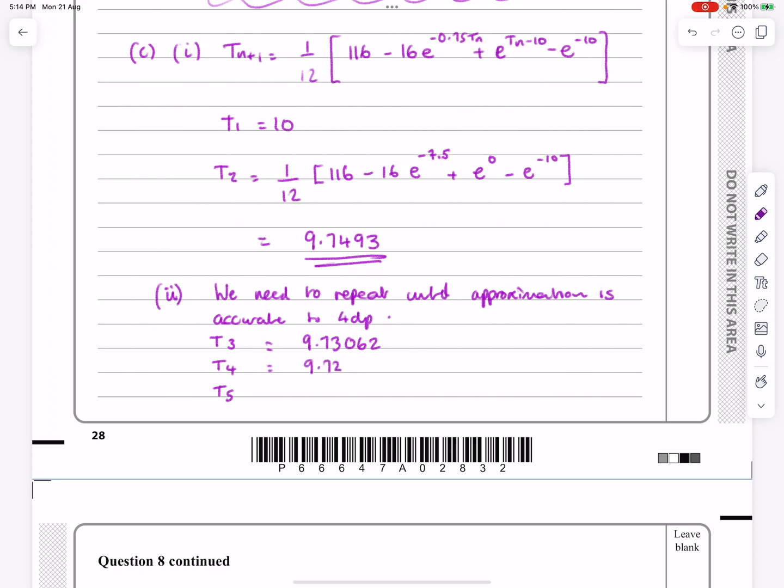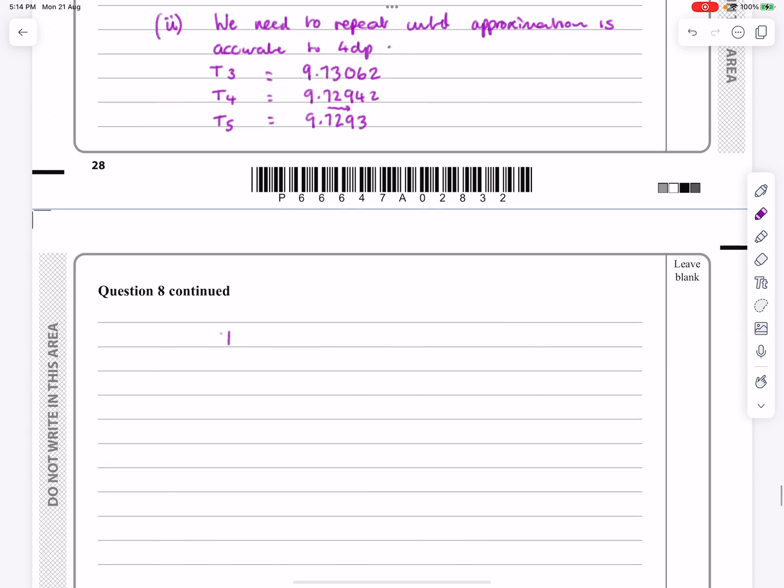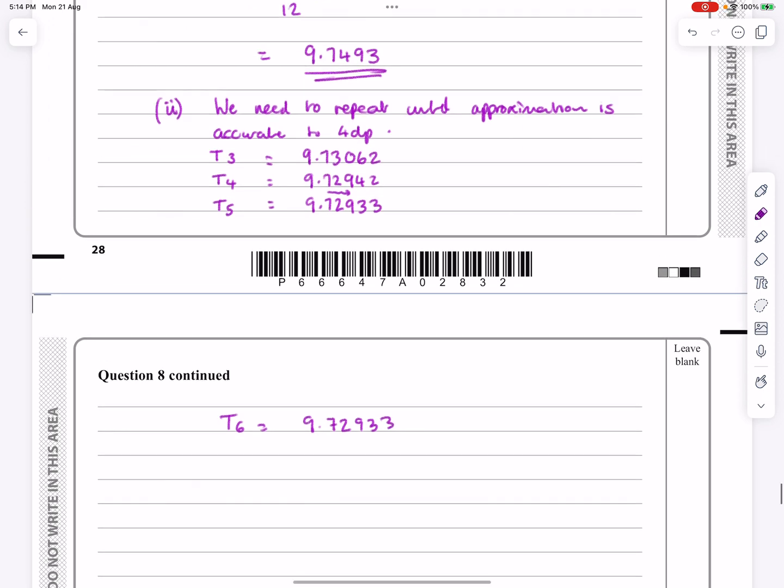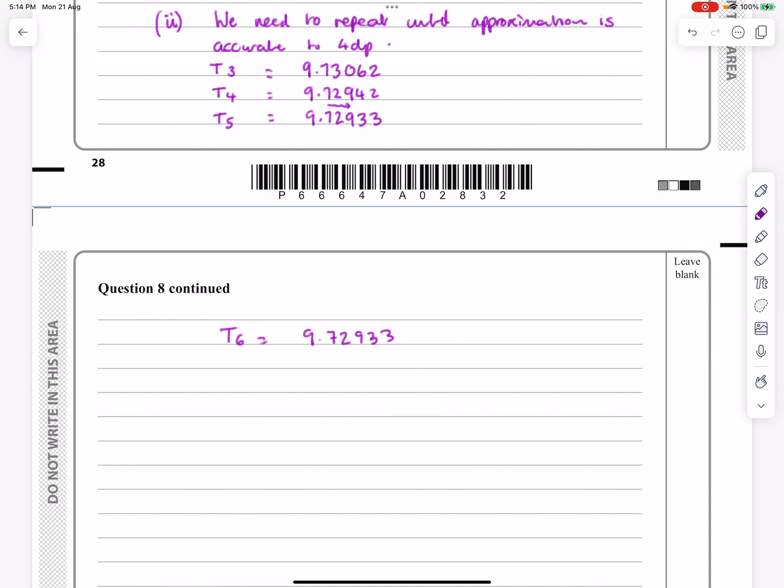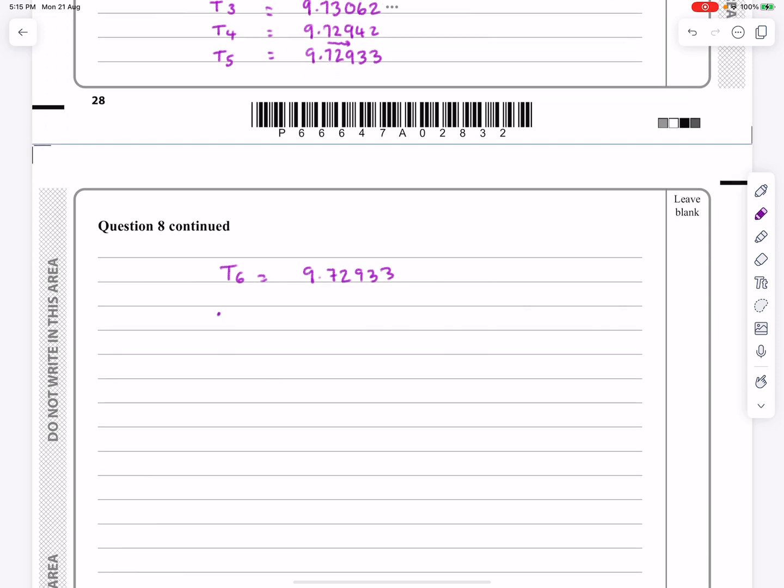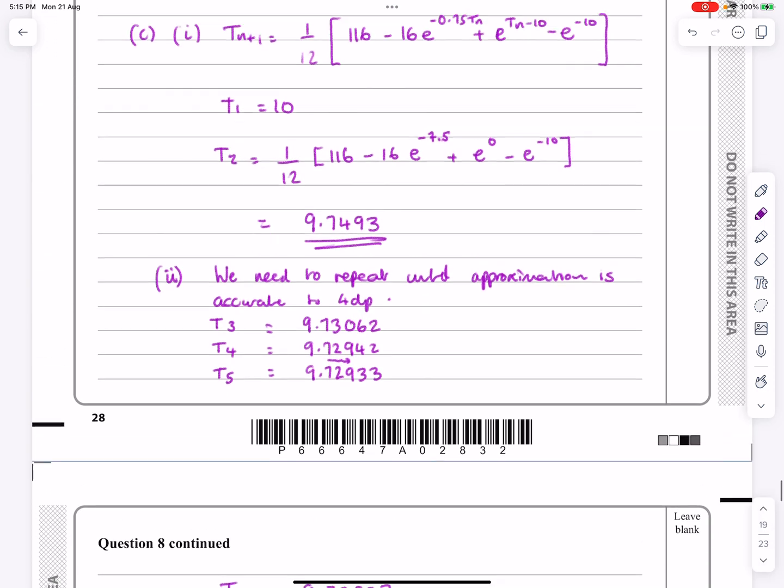Still hasn't converged there. Do it to the next one, that's 9.72933. We can see we're getting there, because now that's starting to be accurate to 3 decimal places there. The 729 and the 729 haven't changed. When I do T6, I actually get 9.72933. So, not only is it staying to 4 decimal places, it's actually staying to 5 decimal places there. So now, because there's been no change in the 4th decimal place, it doesn't matter how much it changes further on, it's not going to impact to 4 decimal places. So I can now say, therefore, T equals 9.7293, and I know that that's accurate to 4 decimal places.